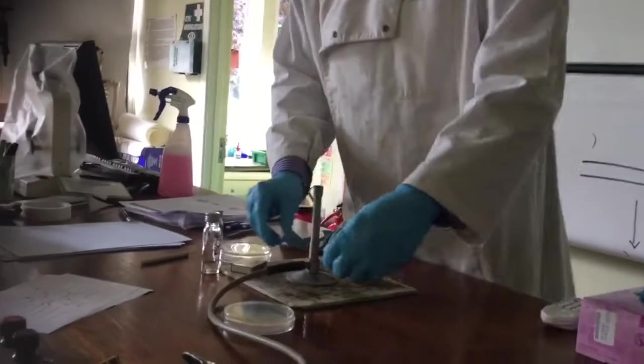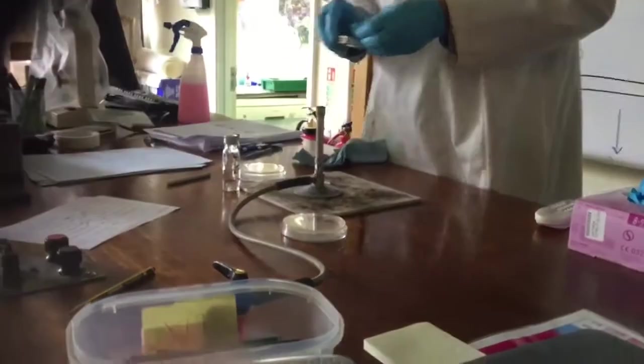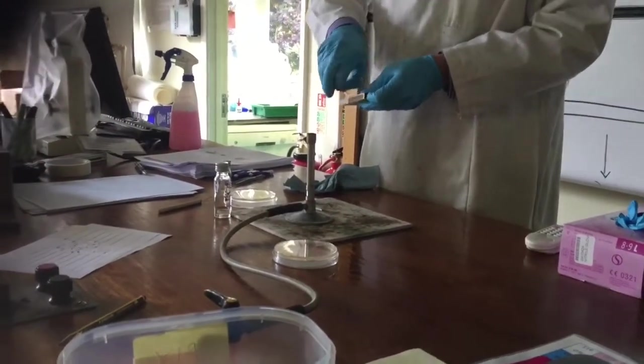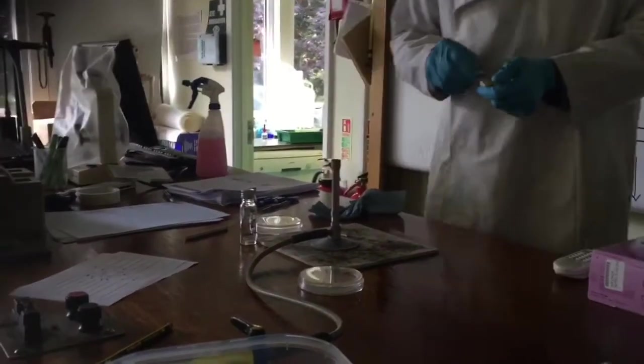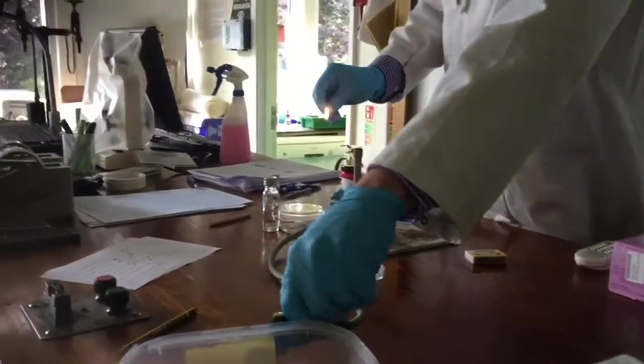Then we're going to check the Bunsen burner air hole is closed. Have our light ready and you'll be able to light from here using the splint. So you have to get your lights from the front. And we're also going to be wearing goggles when we do this.